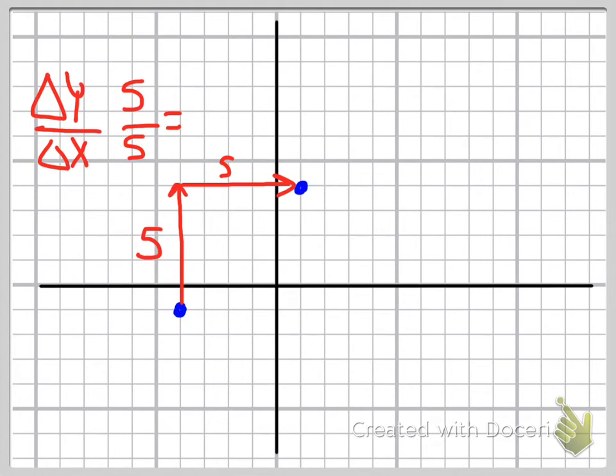which means the slope is five over five. Anytime you can reduce the slope you want to, five divided by five is one over one, which we always just write as a one.